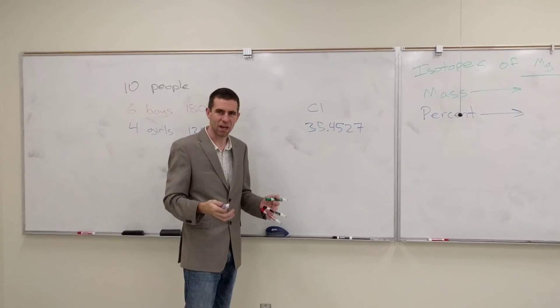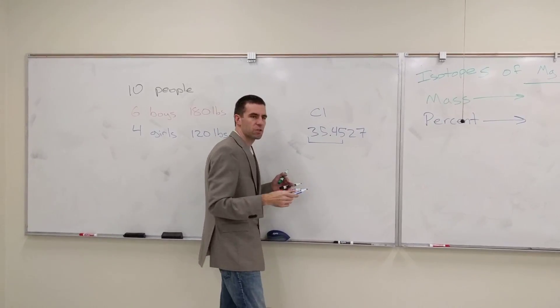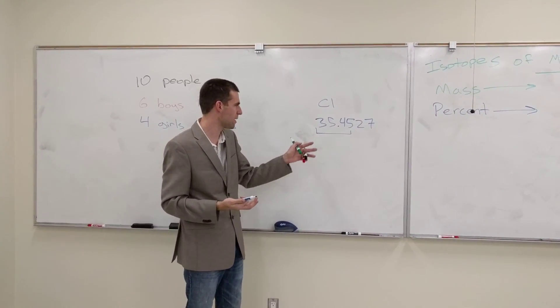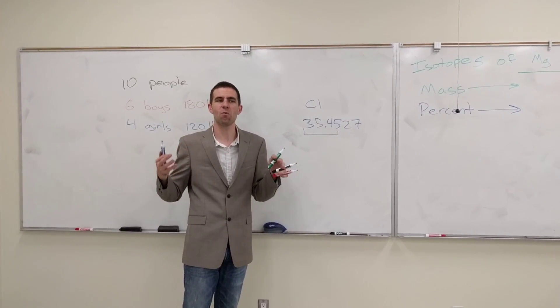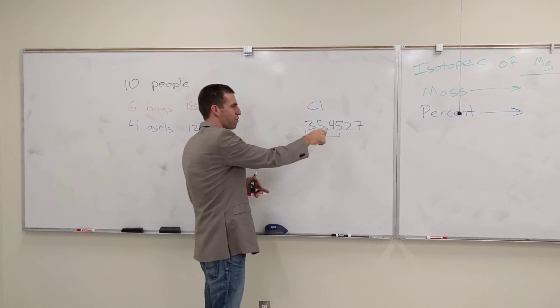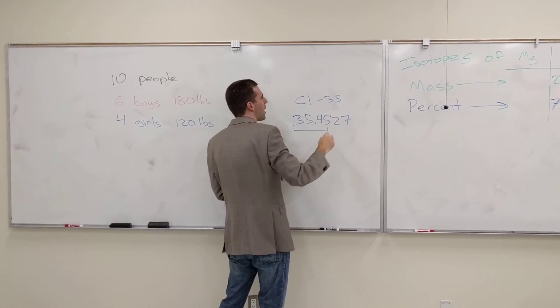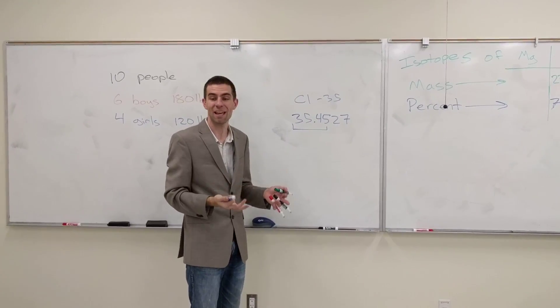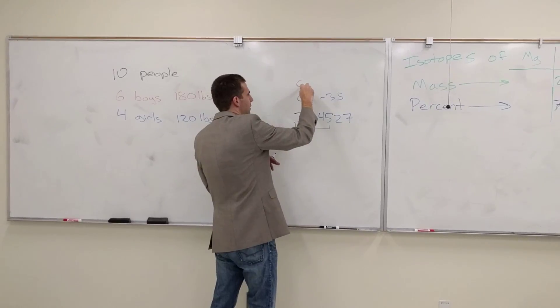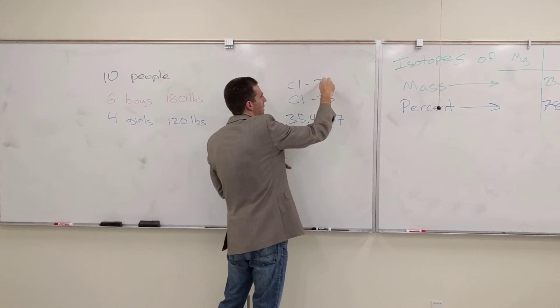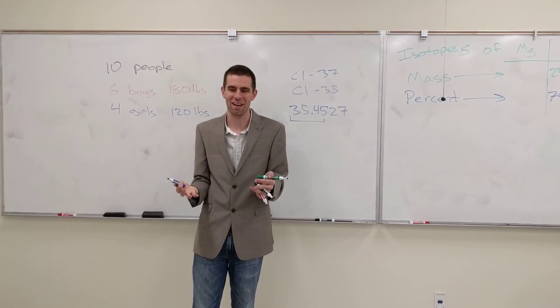But didn't I just finish telling you that protons and neutrons weigh one? How do you get some random number with a bunch of decimals? The reason why is because this isn't just referring to only the chlorine that weighs 35. What if you also had a chlorine that weighed something like 37? What would determine the actual weight? How many of each you had. Does that make sense?